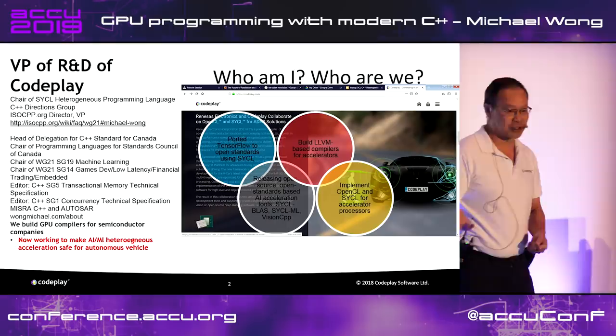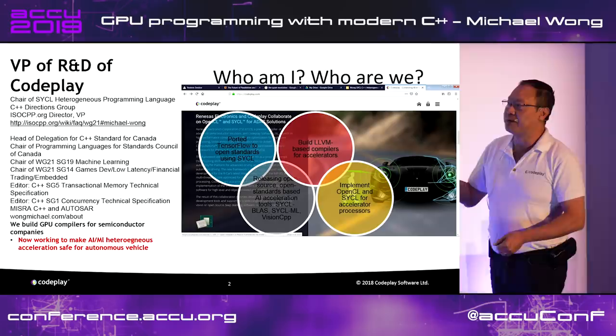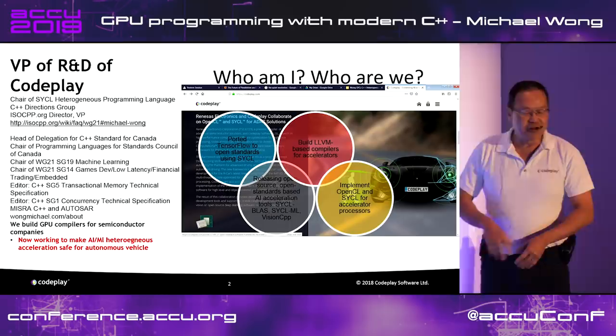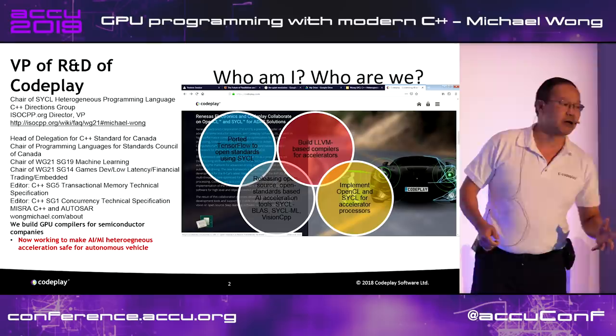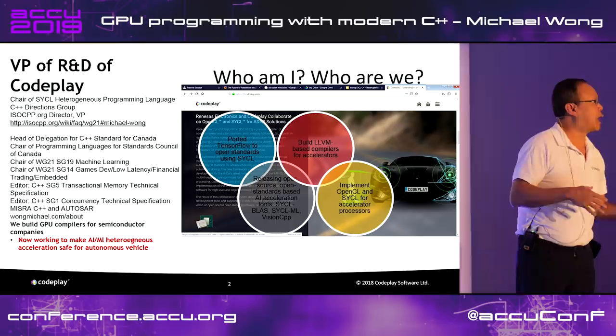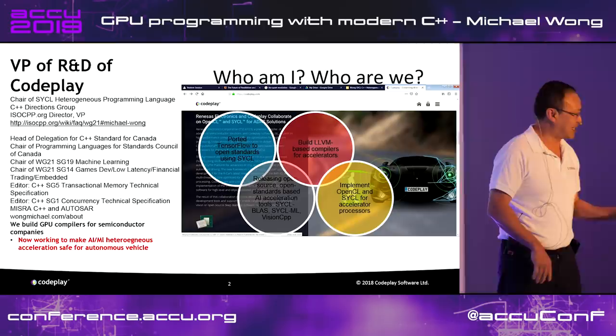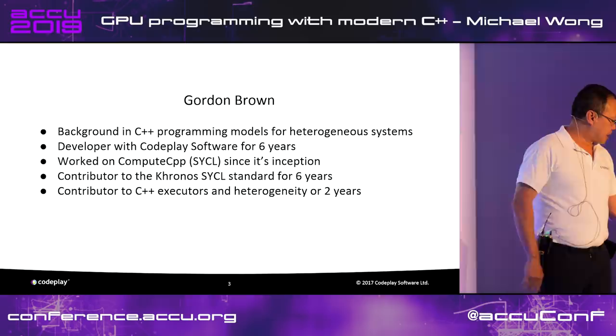I've worn several hats. I work in the C++ standard, in the Chrono specification standard. I chair SYCL, the heterogeneous C++ programming language. I've been a member of the C++ committee for a long time and I chair a number of groups involved with GPU and heterogeneous programming. Underneath all this, I have about 20 to 25 years working at IBM as a research scientist on OpenMP. I came from the high-performance computing community, recently transitioning into autonomous vehicles and consumer devices.